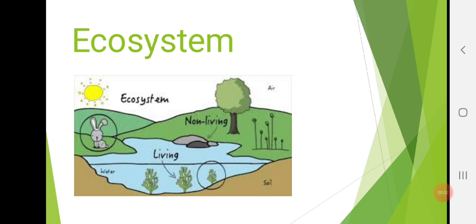So, before moving to the next chapter, the way I usually do, first we will see a revision of chapter number three at one glance. In chapter number three, we have studied ecosystem and biodiversity. So, let's revise.